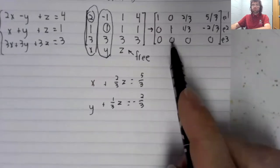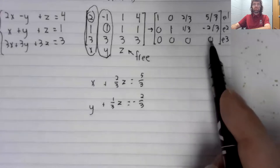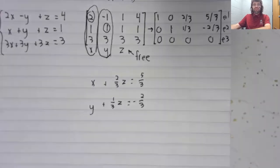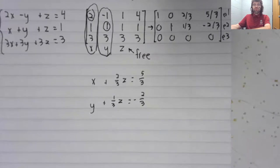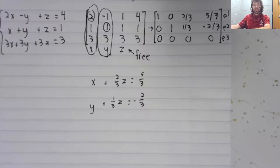Third row: zero equals zero. So the third row isn't doing any harm, but it's not giving us any information either.